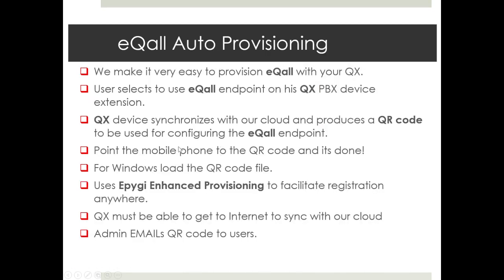eCall auto-provisioning: we make it very easy to provision eCall. The user just selects to use the eCall endpoint on the QX device. The QX device will then synchronize with our cloud and produce a QR code that will be used for configuring the eCall endpoint. For your smartphone, you just point the mobile phone to the QR code and it's done — configured automatically and ready to go.